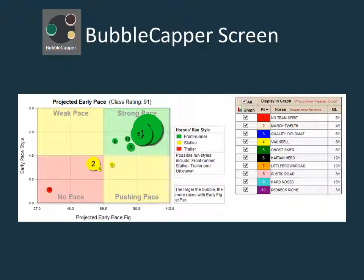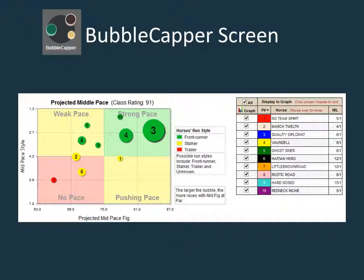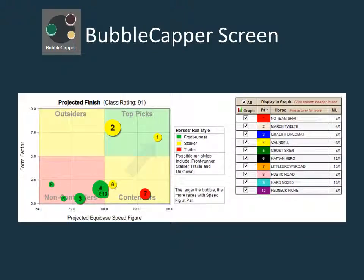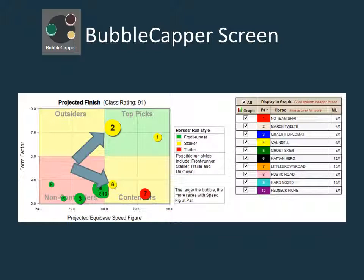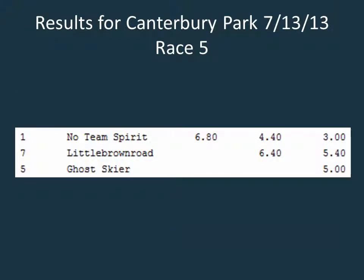Our last example comes from Canterbury Park on July 13th, race 5. This race shows a contentious pace scenario with a good setup for the horses from the back of the pack. It is a claiming race at 6 furlongs on the dirt. The projected early pace graph shows 6 front runners looking to battle from the start. The projected middle pace graph shows 3 front runners battling strongly with the number 1 keeping a stalking position. The projected finish graph shows the number 1 charting on top with the 7 closing from behind, while the 2 and 6 look to pick up the minor awards. In this instance, the 1 and 7 completed a very logical exacta. As you can see, pace analysis isn't always about trying to pick the front runners.